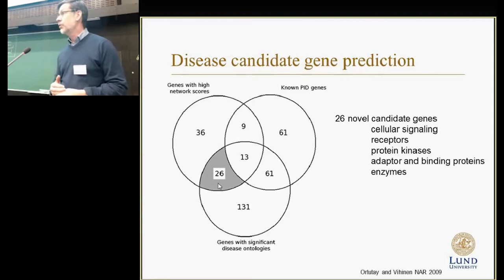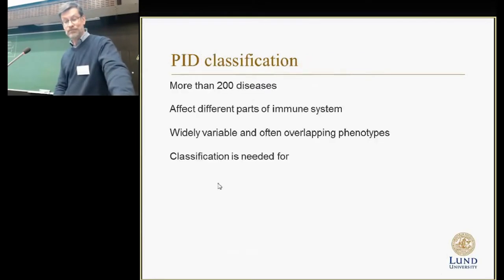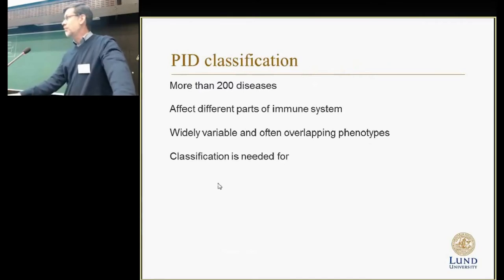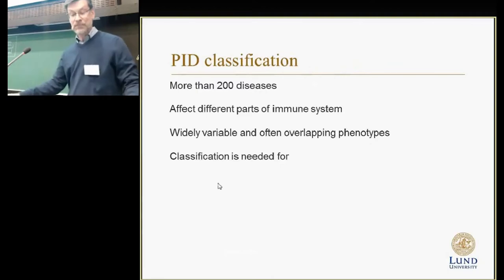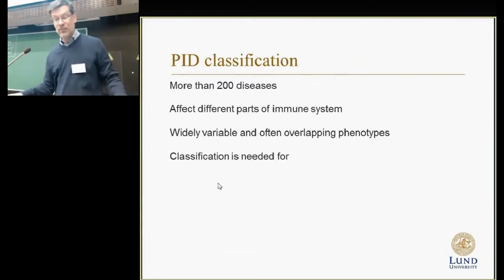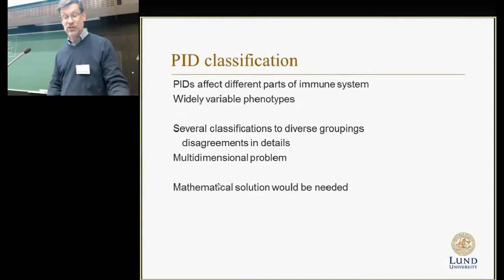Some of those are so central that they are probably lethal and can't be seen in PIDs. The next step is looking at the classification of primary immunodeficiencies — there are more than 200 of these intrinsic defects of the immune system. The classification is needed for different purposes including diagnosis, treatment choice, research purposes, informatics, and demographics. There are widely variable phenotypes which make classification difficult, and several existing groupings. Since there are more than 200 diseases, it's getting difficult to keep all things in mind.